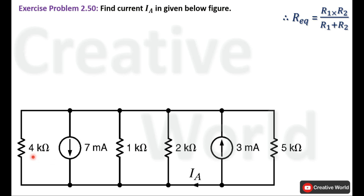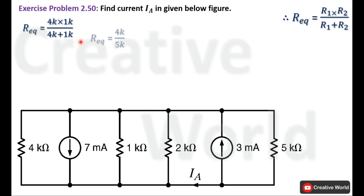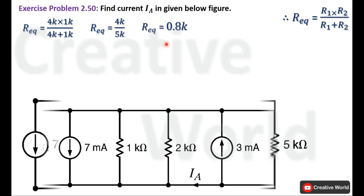We will start from the left side of the circuit. First we will find the equivalent resistance of 4 kΩ and 1 kΩ, assuming 4 kΩ is R1 and 1 kΩ is R2. Placing values inside the equation: product of 4 and 1 is 4, and sum of 4 and 1 is 5k. Dividing 4k by 5k gives 0.8k. We can now replace these two parallel connected resistances with a single equivalent resistance of 0.8kΩ.